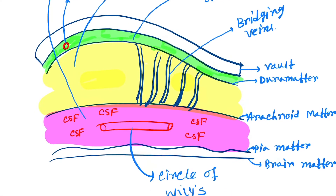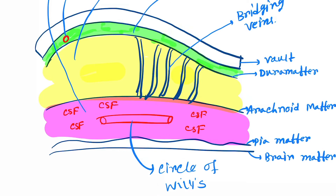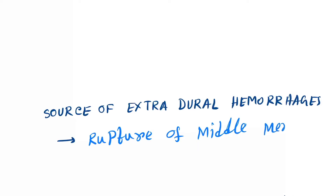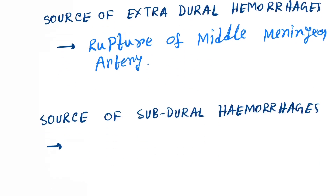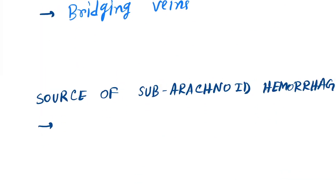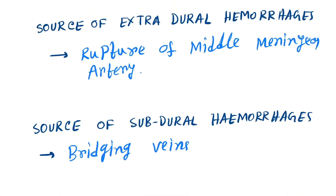Subarachnoid hemorrhage is caused by rupture of the Circle of Willis due to any trauma. To summarize the sources: extradural hemorrhage — rupture of the middle meningeal artery; subdural hemorrhage — bridging veins; subarachnoid hemorrhage — Circle of Willis.